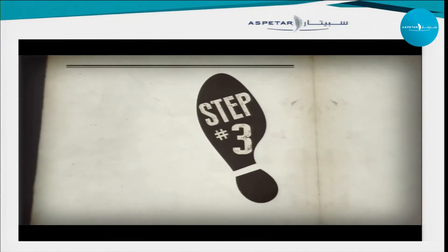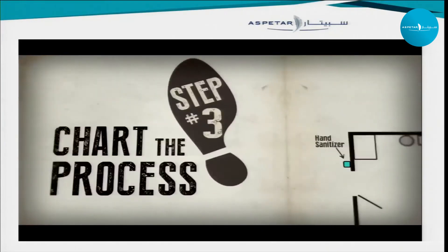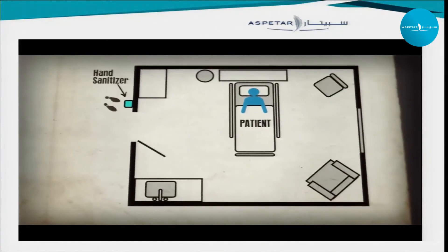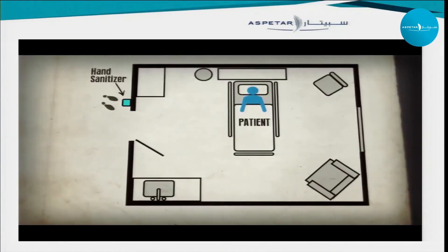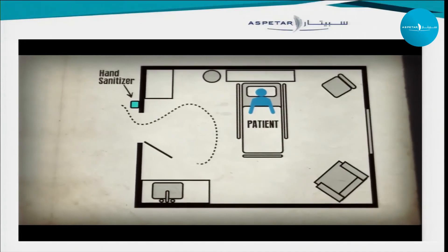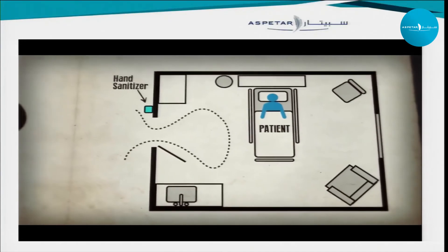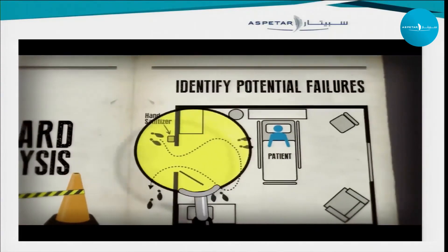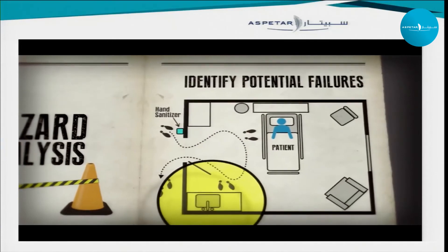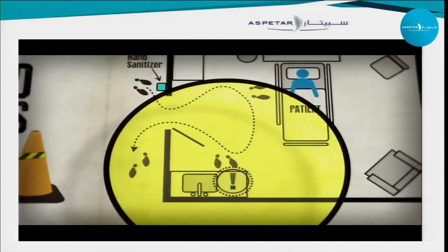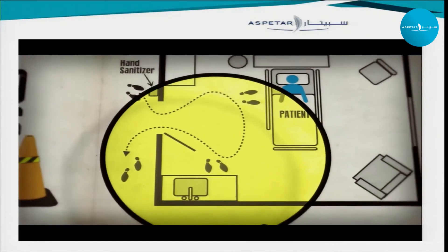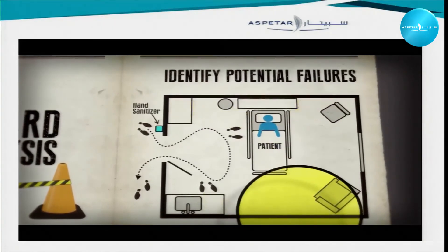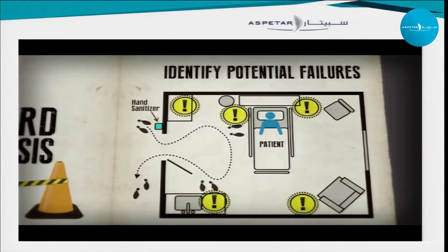Step three is for the team to chart the process. Create a detailed flowchart of the current process around hand hygiene at the point of care: a person cleans hands before entering the room, enters the room, provides care, and leaves. Step four is hazard analysis — identify the potential failures at each step. In this example, a potential failure can occur when hand hygiene is not performed after patient contact, or when there are no hand hygiene products or stations at the point of care in the patient's room.